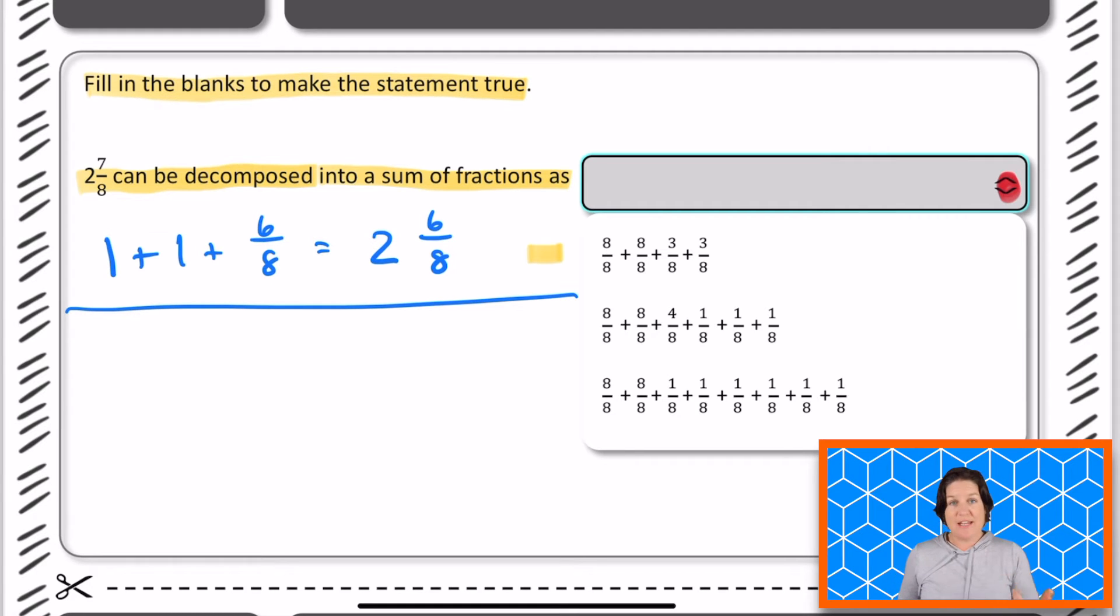So for our next one, we have eight eighths, which is equal to one whole, plus eight eighths, which is equal to one whole. All right, now let's add the rest of them. We've got four eighths, five eighths, six eighths, seven eighths. Oh my goodness.